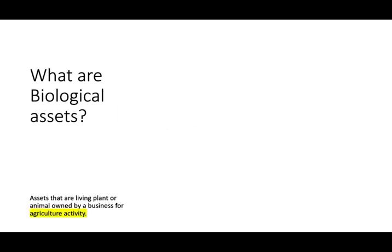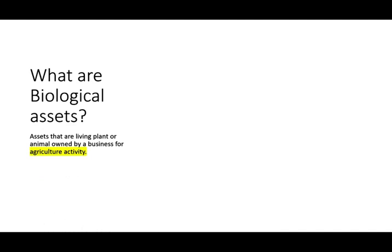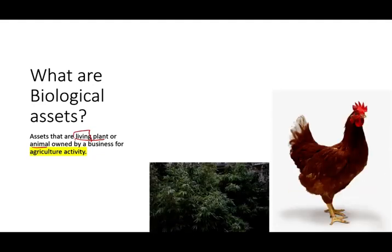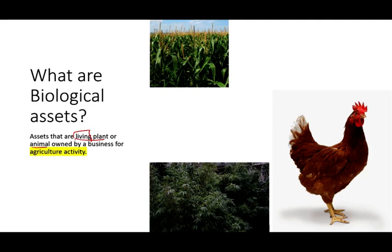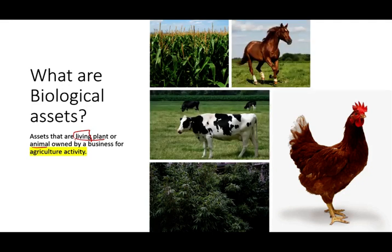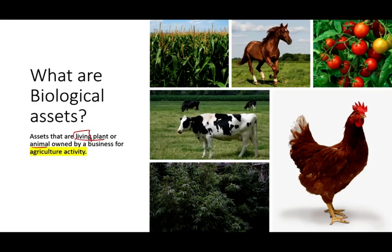The first thing we want to learn is what are biological assets, because the topic is about biological assets. Biological assets are assets that are living plants or animals owned by a business for agricultural activity. We're talking about chicken, cannabis plant, corn, cow, horse, tomatoes — all of these are considered biological assets owned by a business for the purpose of agricultural activity.